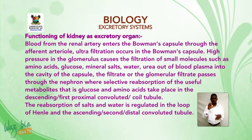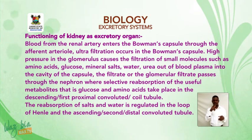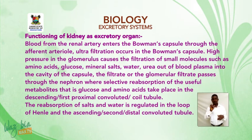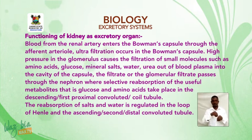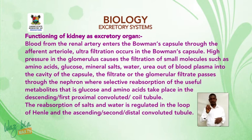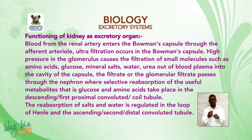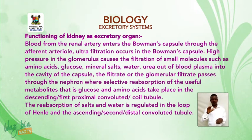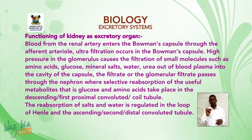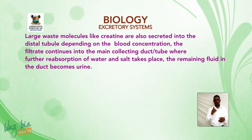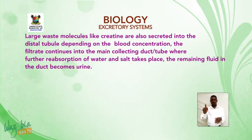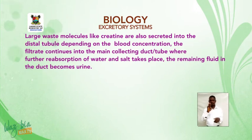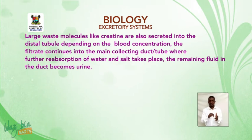The glomerular filtrate passes through the nephron where selective reabsorption of useful metabolites — glucose and amino acids — takes place in the proximal convoluted tubule. Reabsorption of salts and water is regulated in the loop of Henle and the distal convoluted tubule. Large waste molecules like creatinine are also secreted into the distal tubule. The filtrate continues into the collecting duct where further reabsorption of water and salt occurs, and the remaining fluid becomes urine.